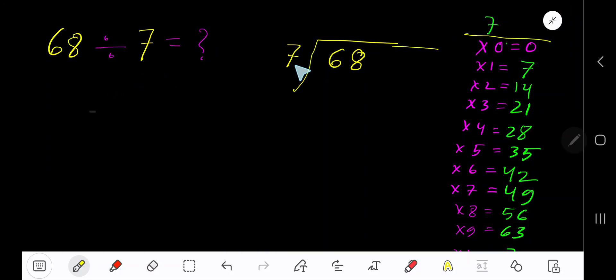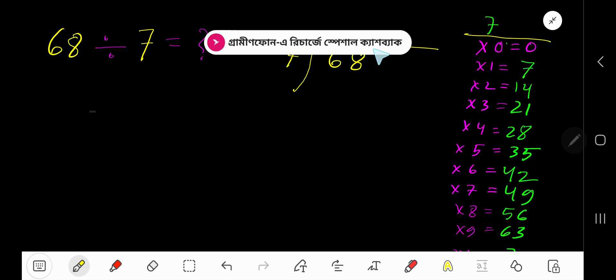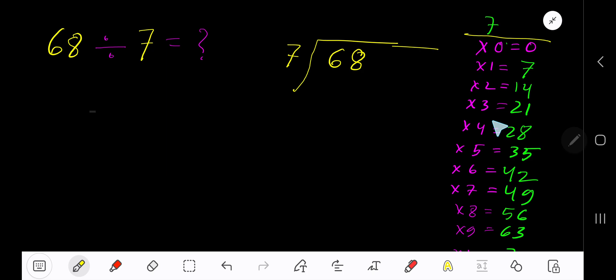68 divided by 7. Here 7 is the divisor, so we need the multiplication table of 7. 7 times 0 is 0, 7 times 1 is 7, 7 times 2 is 14, 7 times 3 is 21.